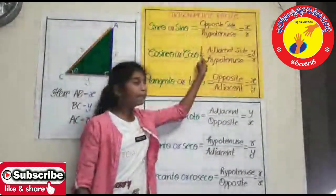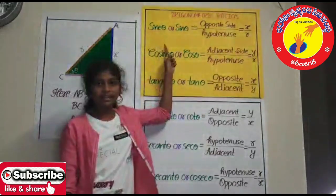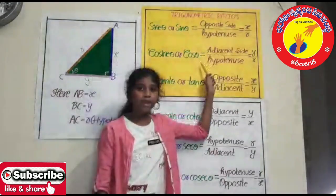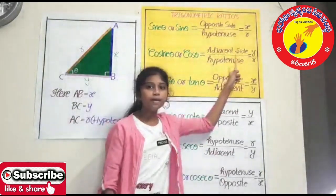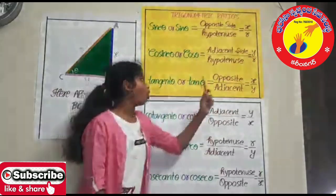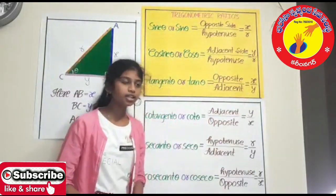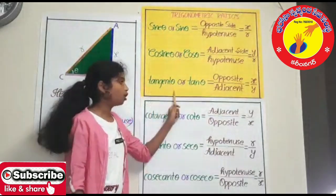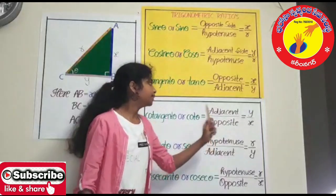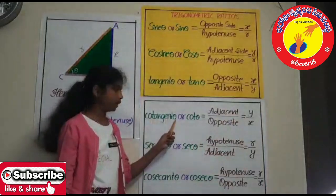Opposite side by hypotenuse, that is X by R — this ratio we call sine theta or sin theta. Adjacent side by hypotenuse, that is Y by R — this ratio we call cosine theta or cos theta. Opposite side by adjacent side, that is X by Y — this ratio we call tangent theta or tan theta. Adjacent side by opposite side, that is Y by X — this ratio we call cotangent theta or cot theta.